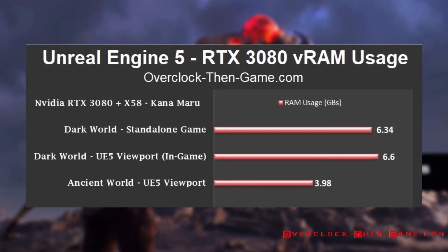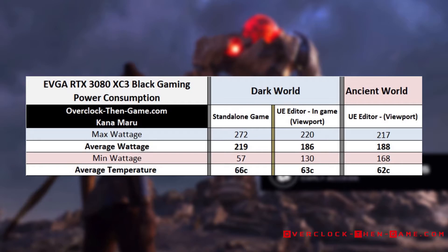Now we will take a look at the RTX 3080 VRAM usage. On average, I got 6.34 GB in the standalone game while playing the Dark Warrior map, and 6.6 GB while playing the Dark Warrior map within the UE5 editor. The Ancient World map shows an average of 3.98 GB. The RTX 3080 pulled an average of around 187 watts in the UE5 editor, while the standalone game pulled 219 watts.